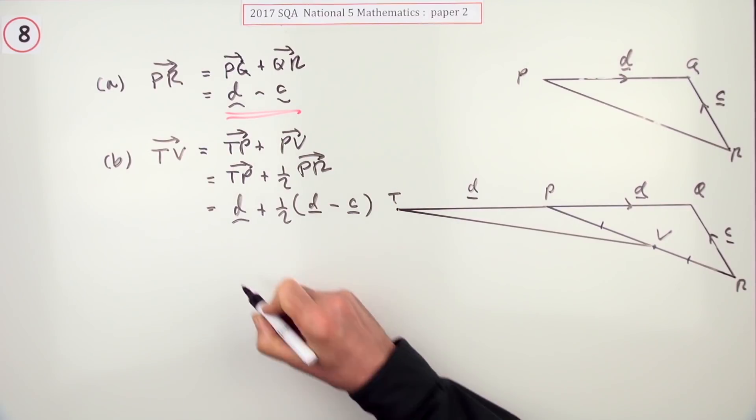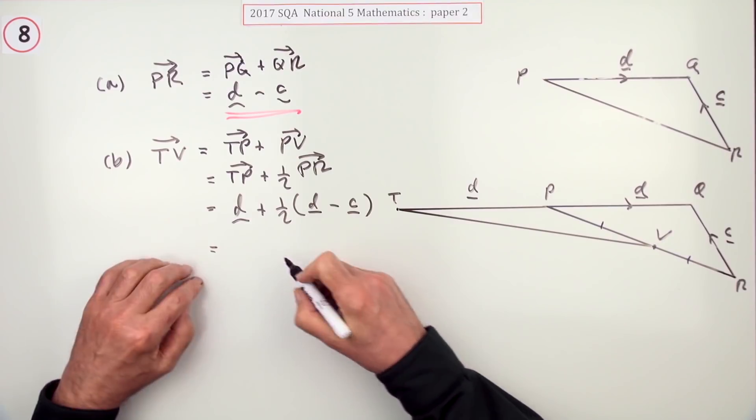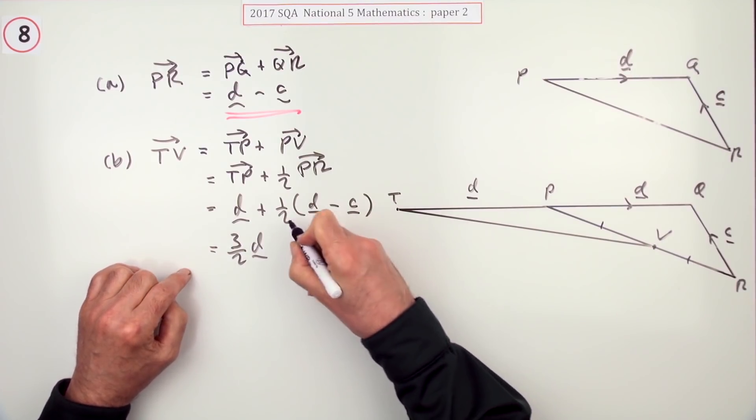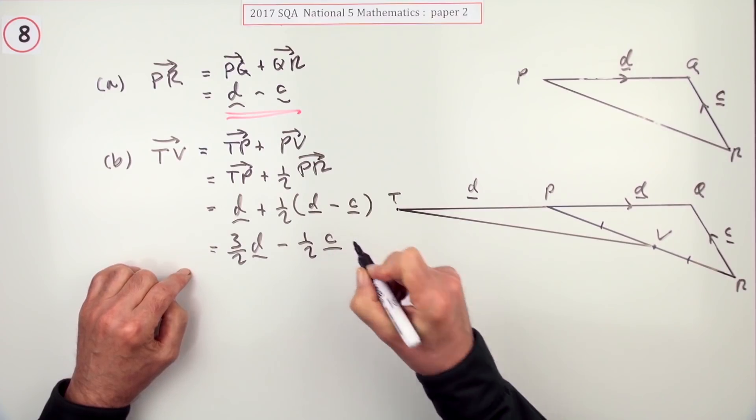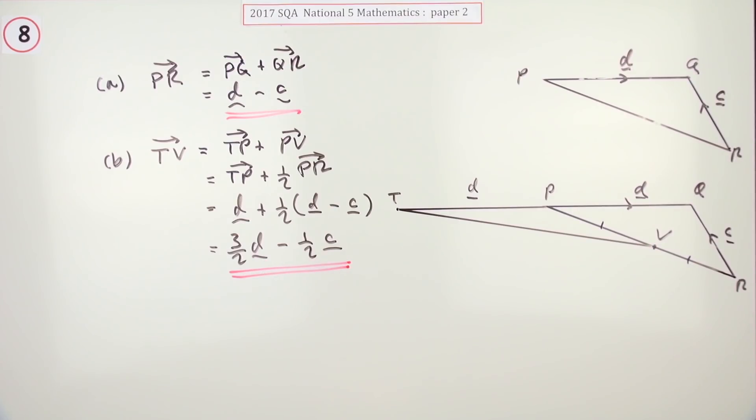And then just multiplying it out I've got d plus another half of d so that's three upon two d, but it's minus a half of c. There we go, safely arrived.